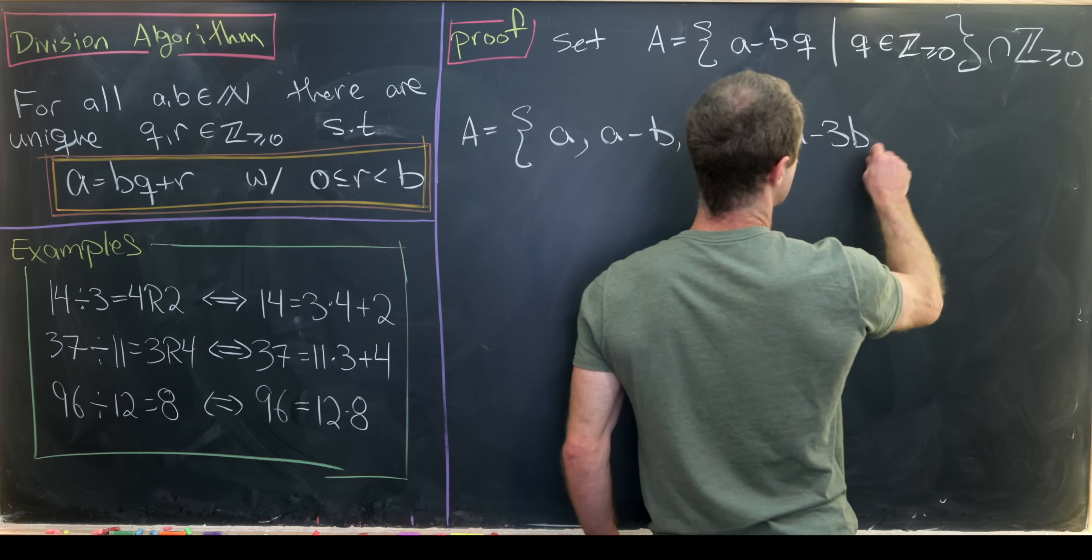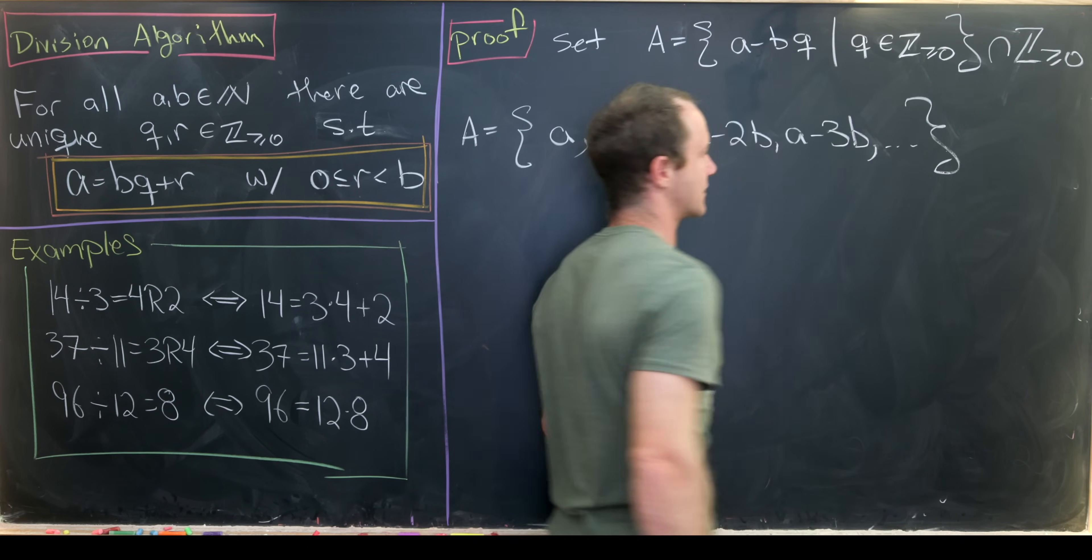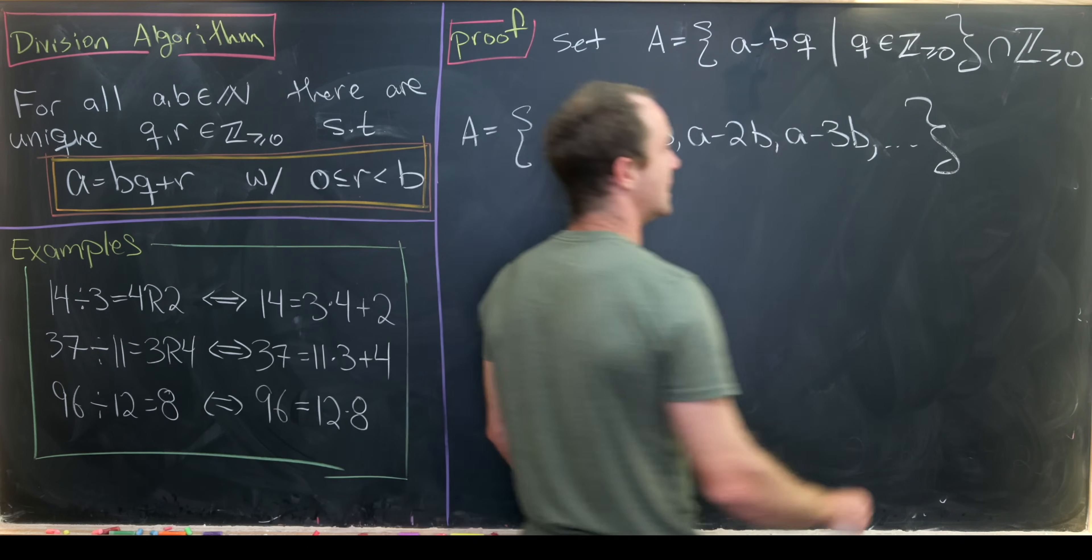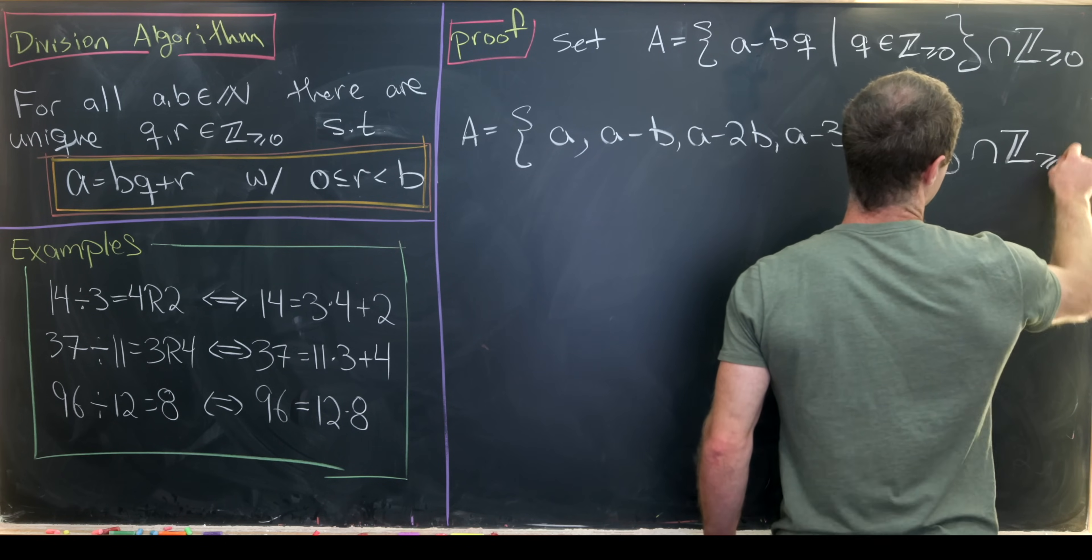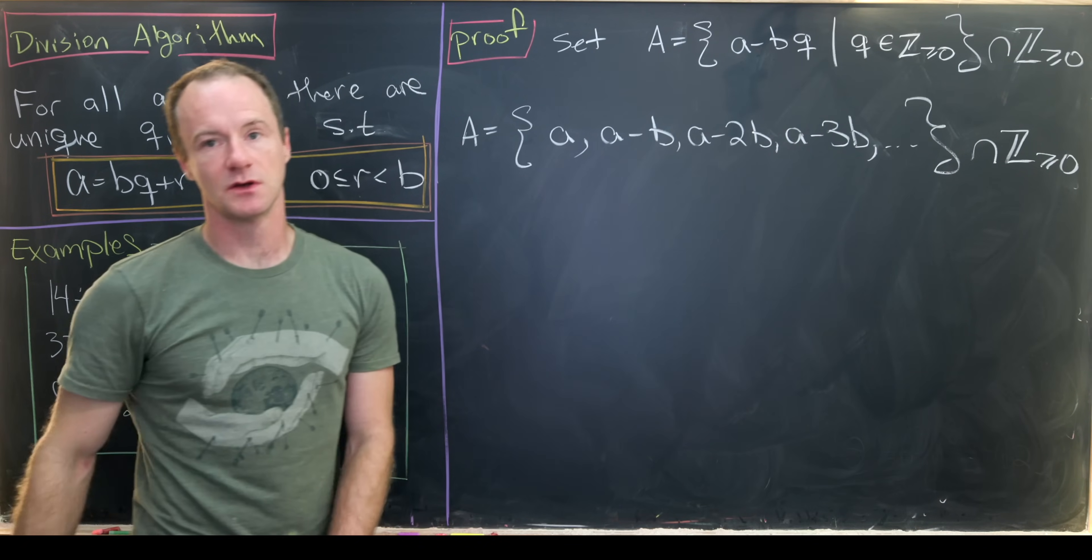a minus 2b, a minus 3b, and then so on and so forth. And then we're intersecting this with non-negative integers. Great.